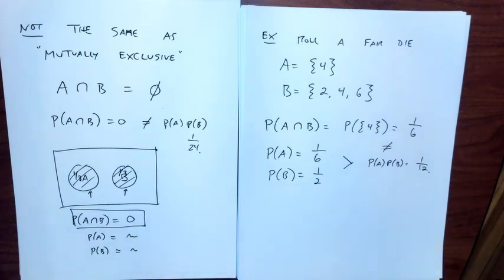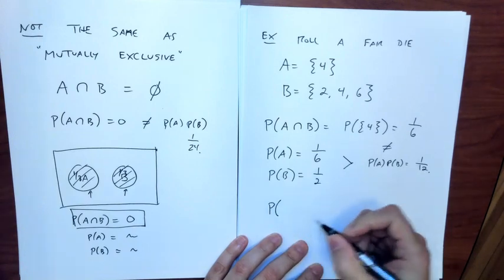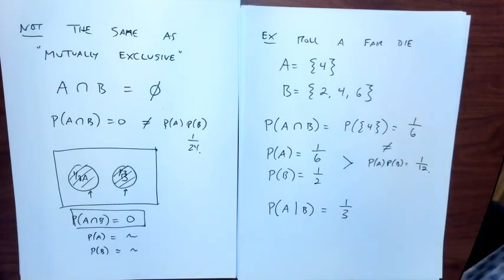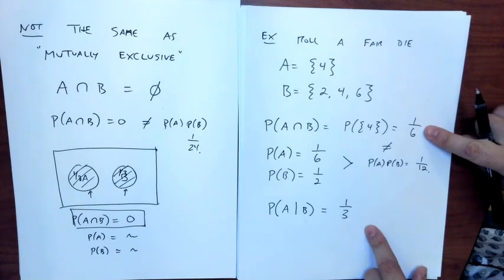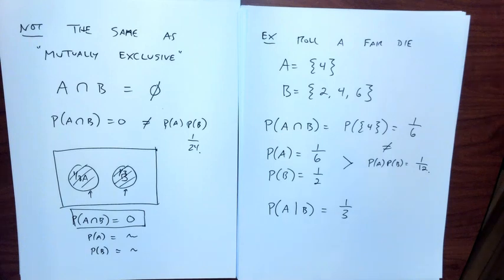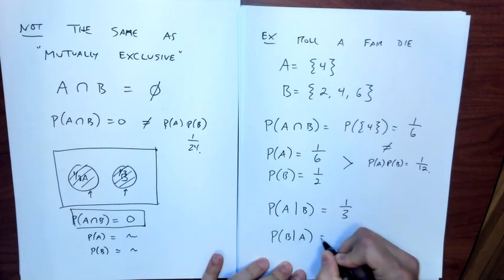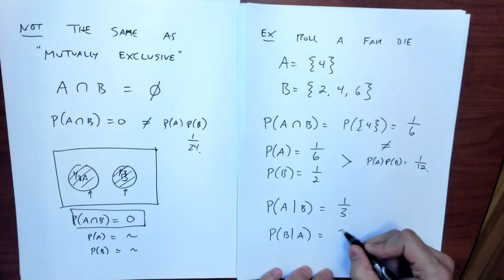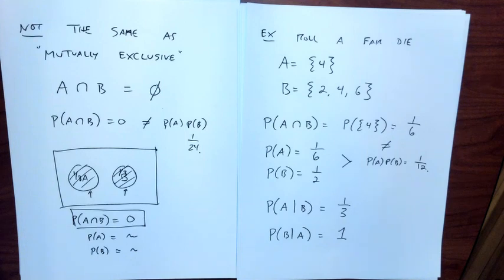Going back to conditional probability: the probability of A given B is one-third. Before knowing B, the probability was one-sixth; after knowing B, it increases to one-third, so clearly knowing B tells me something about A — the events are not independent. And the probability of B given A is one: if I tell you a four was rolled, then absolutely an even number came up. So if the conditional probability changes when you know the event, those two events are not independent.